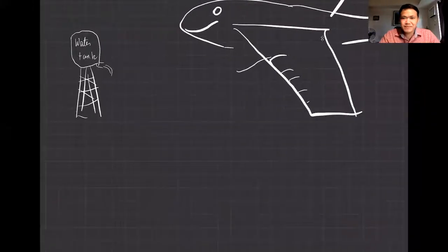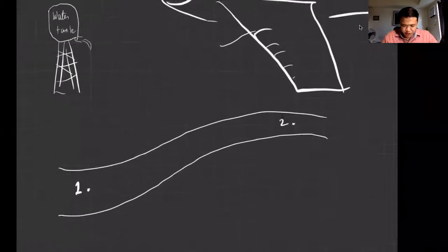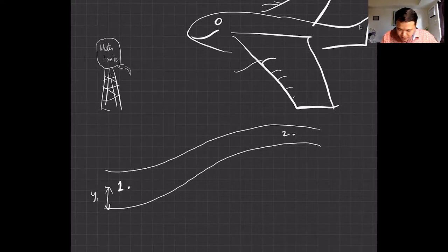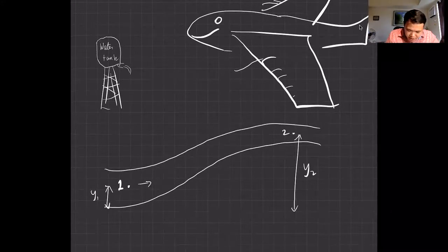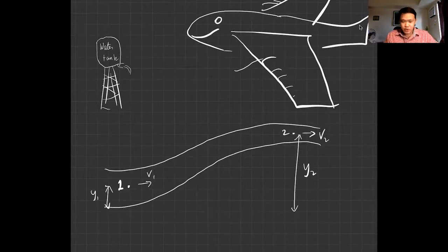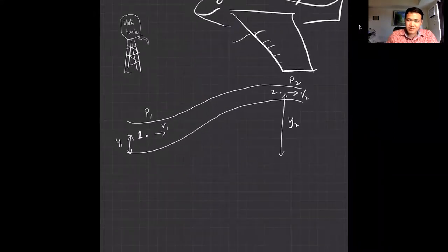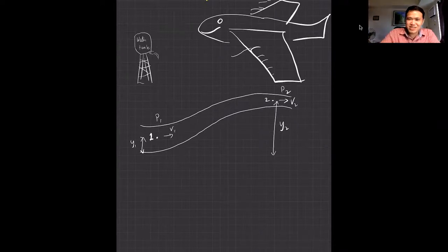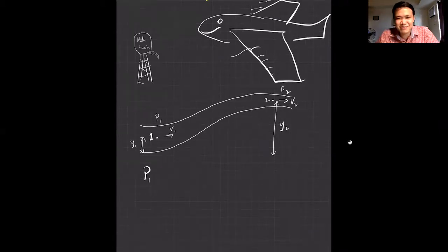Let's say we have a piping system. We consider two points: point one is at some height y1, and point two is at height y2. There's a pressure and velocity v1 at point one, and pressure and velocity v2 at point two. According to Bernoulli's equation — named after Daniel Bernoulli, we share the same name so maybe I'm also good in physics —